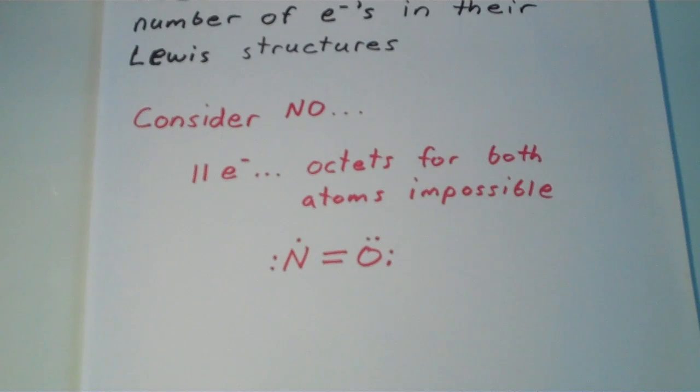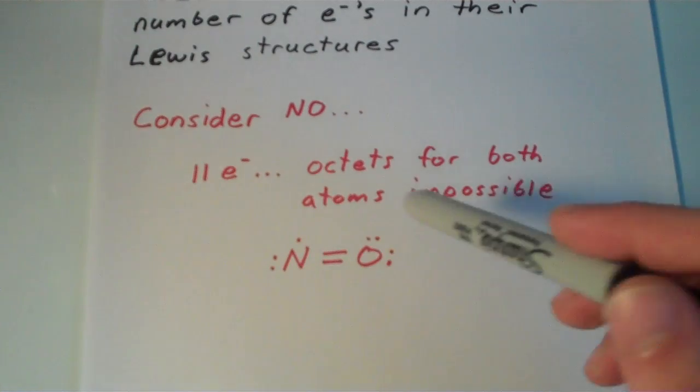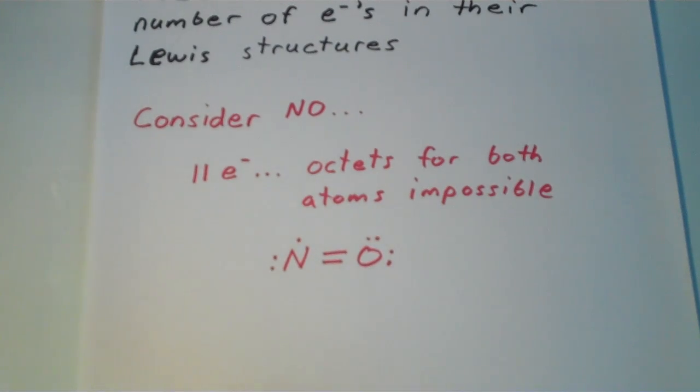Other than the fact that there's an odd number of electrons, this is a pretty good Lewis structure. The oxygen has an octet. More electrons are placed on the more electronegative atom, which is the oxygen. And furthermore, both of these atoms have a zero formal charge.